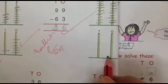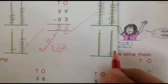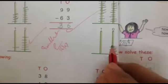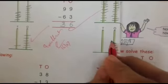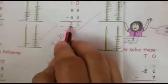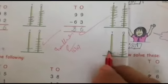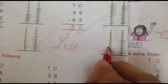It means 6 beads we will put in 1s place. 1, 2, 3, 4, 5, 6. And 10s place? 3. 1, 2, 3. Now you will do this page in your book. Thank you.